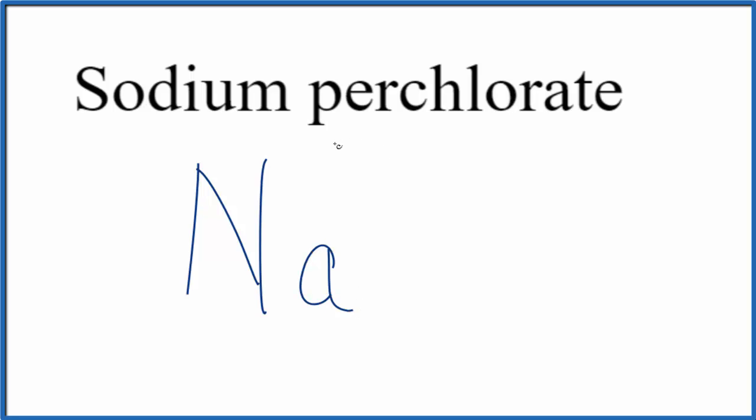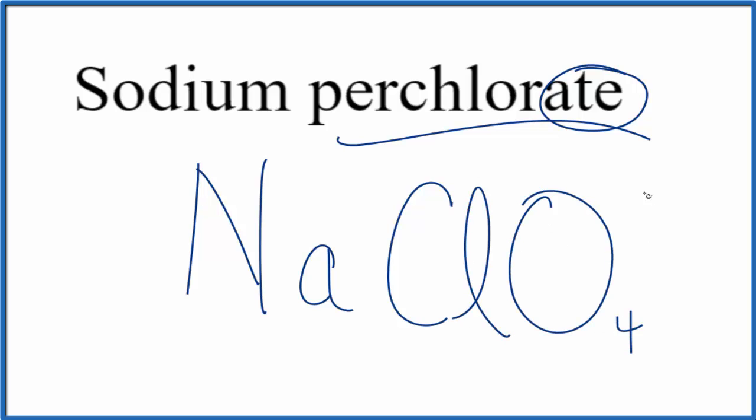Then the perchlorate here, you won't find this on the periodic table. It ends in A-T-E. That means it's a polyatomic ion. So you either memorize that the perchlorate ion is ClO4, and the whole thing is 1 minus, or you look it up on a table of polyatomic ions if you're allowed to.